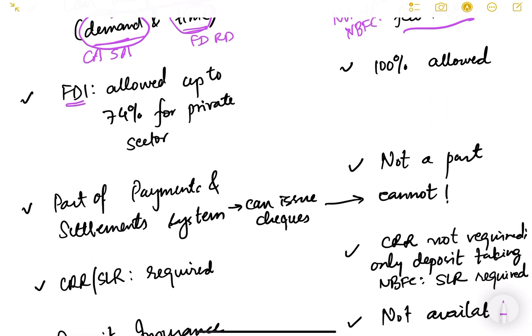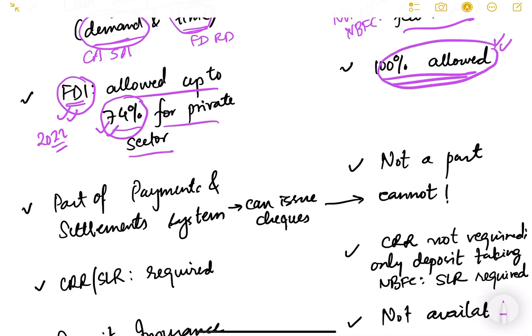Regarding foreign direct investment, FDI in private sector banks is allowed up to 74 percent as per 2022 regulations — though this can change in the future. In NBFCs, however, 100 percent FDI is allowed. This means an NBFC can be 100 percent owned by a foreign entity.